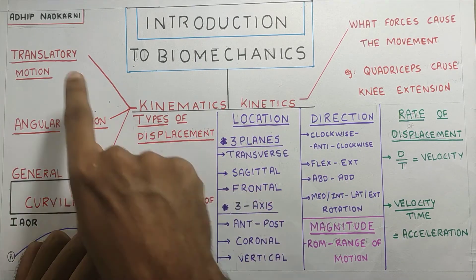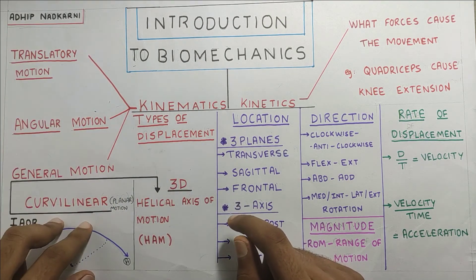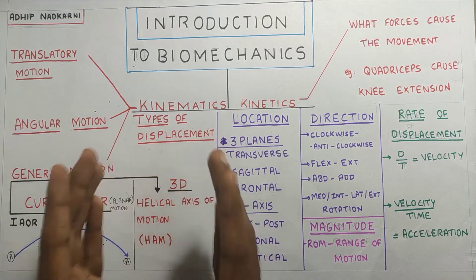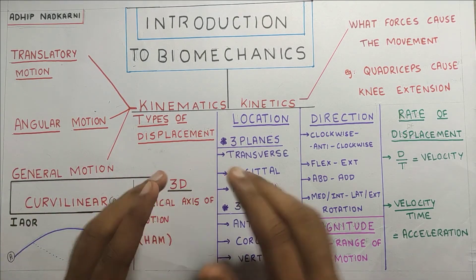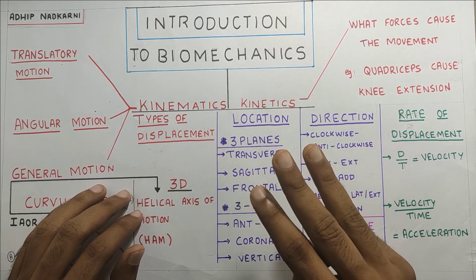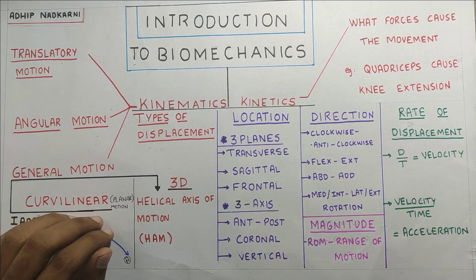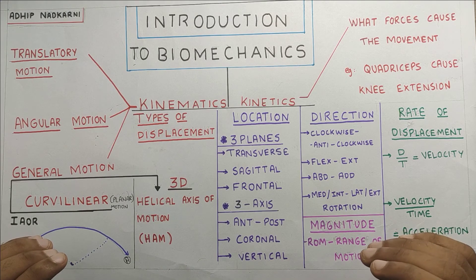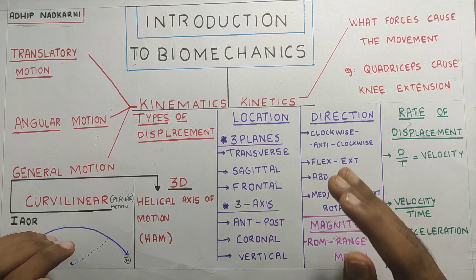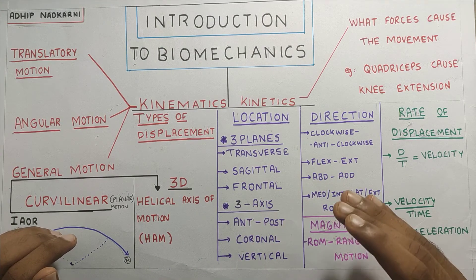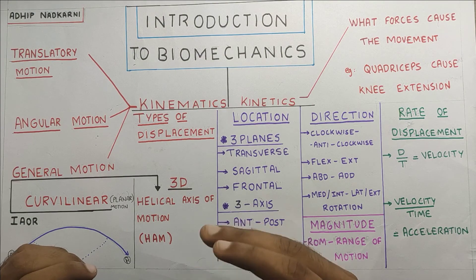To summarize: under kinematics we talked about types of displacement — translatory and angular, with curvilinear as a combination, and three-dimensional movement. We covered location via three planes and three axes, direction using flexion/extension, abduction/adduction, and medial/lateral rotation, magnitude as range of motion, and rate of displacement as velocity and acceleration. Finally, kinetics is the study of forces that cause movement. If you like my content, please share it, hit subscribe, and let me know in the comments what other videos you'd like me to cover.